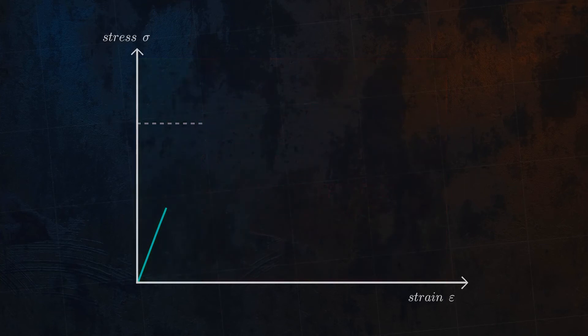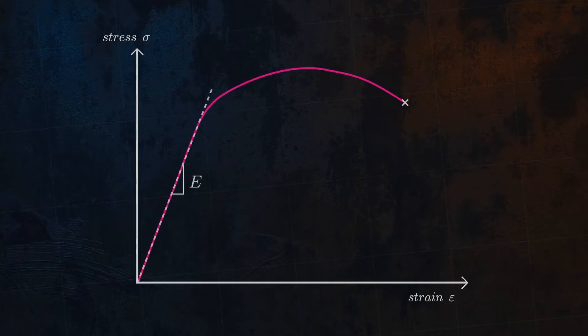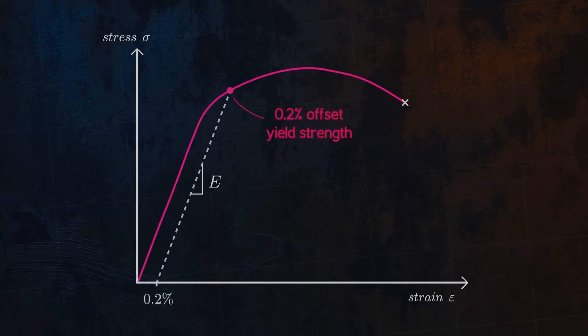For some materials, the transition from elastic to plastic deformation is not clearly defined. In these cases, the yield strength can be defined using the 0.2% offset method.